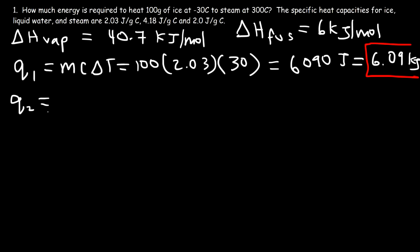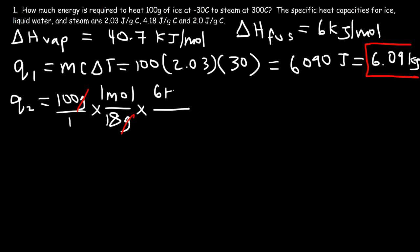For Q2, we have 100 grams of ice — essentially H₂O with a molar mass of 18 grams per mole. Dividing 100 by 18 gives us moles, then multiplying by 6 kilojoules per mole gives the energy to melt the ice. So 100 divided by 18 is about 5.56 moles, times 6, giving approximately 33.3 kilojoules of thermal energy.